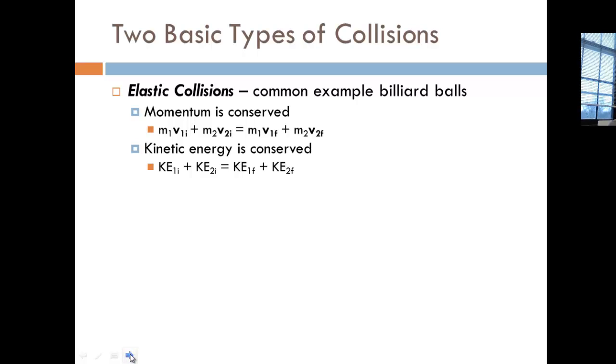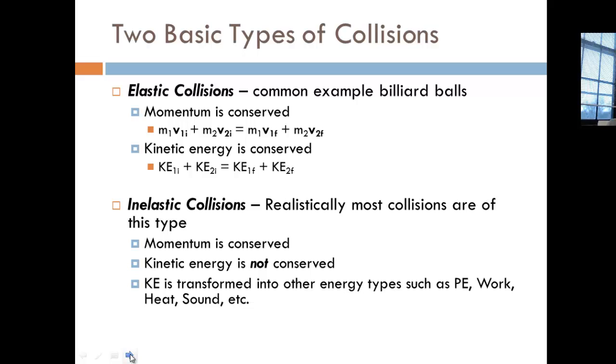What other types of collisions are there? The second type is called inelastic collisions. And realistically, in real life, on Earth, most collisions are of this type. So what's conserved? Momentum is still conserved, so mathematically you're going to treat it just like you did for the elastic collisions. However, kinetic energy is not conserved.